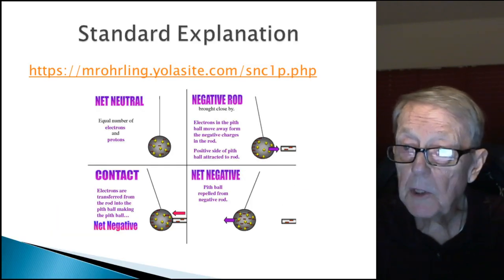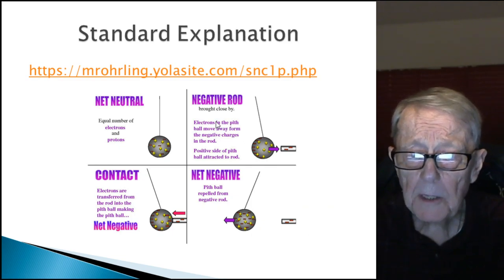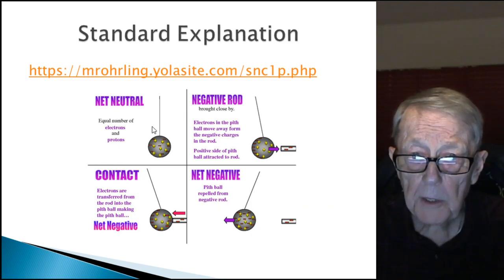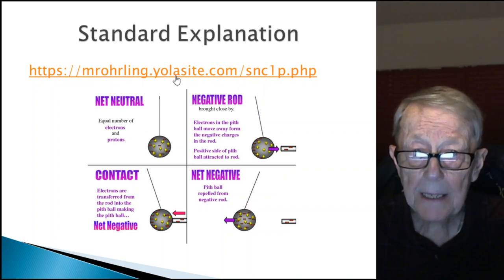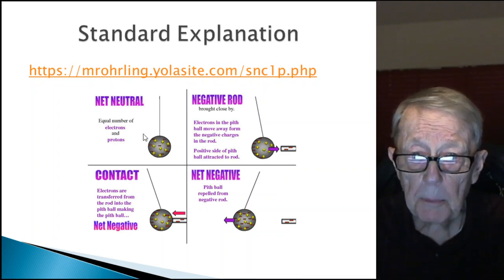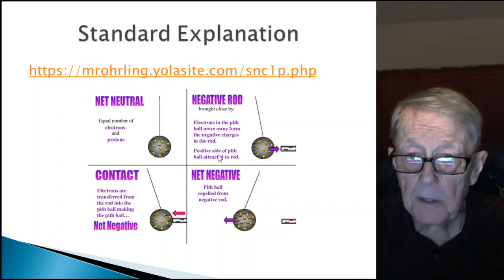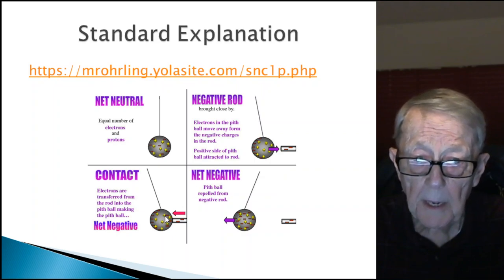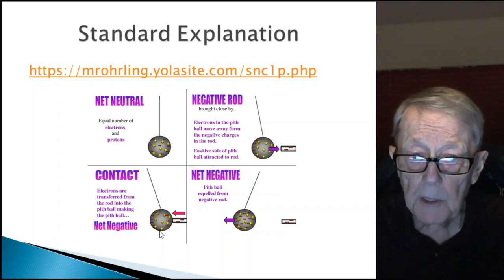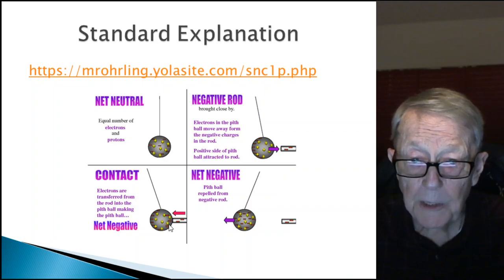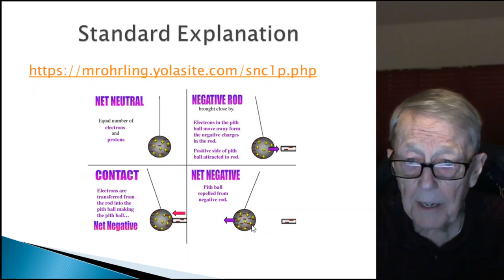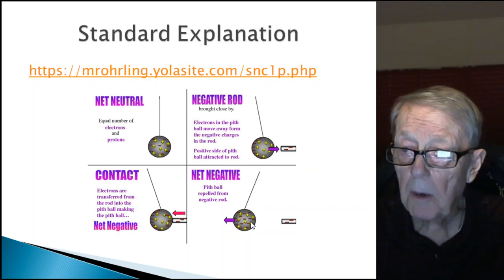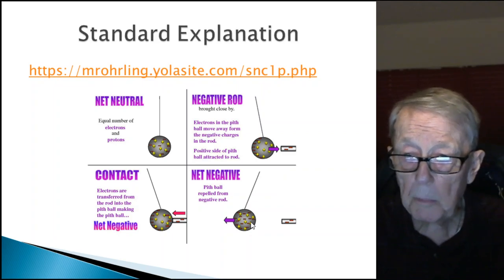So we start with the pith ball. This is the standard explanation in this graphic I got from this link. It shows the pith ball in a neutral state, then what happens when you approach it with a negatively charged rod. There's induction, and then it tells you what happens when you touch it, and finally when the pith ball is pushed away, repulsed.